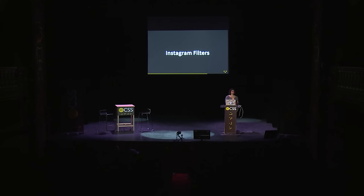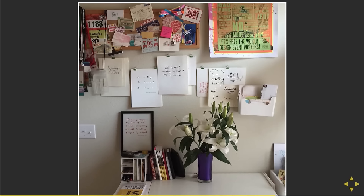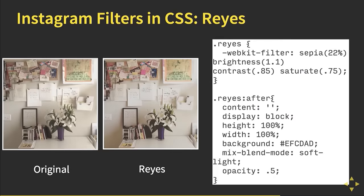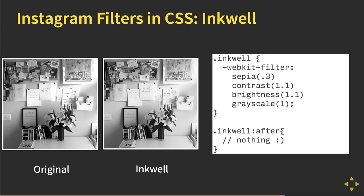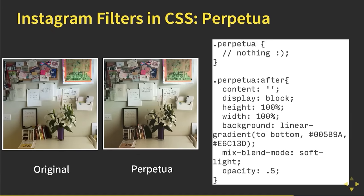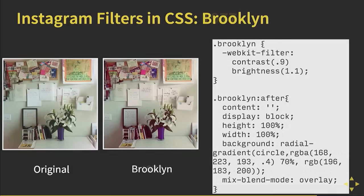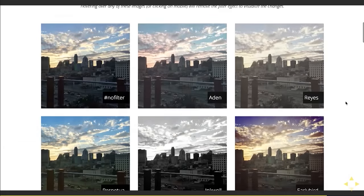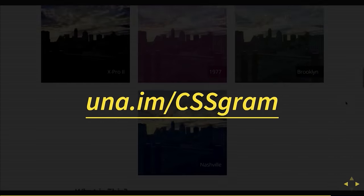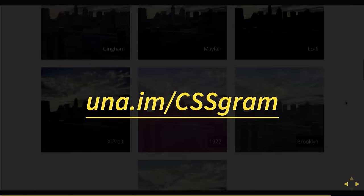So I decided to make some Instagram filters because recreating something is the best way to learn. Starting from an image of my desk in my apartment, you can recreate Raze or Inkwell using just filters, Perpetuo using only blend modes, and the rest — Lofi, 1977, Brooklyn, X-Pro2 — are a mix of the two. I combined these into a library called CSSgram, which you can use in active development and apply to your webpage. I highly encourage you to participate in open source — it's all online and open, just using filters, blend modes, and gradients.